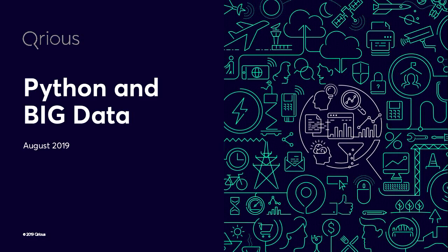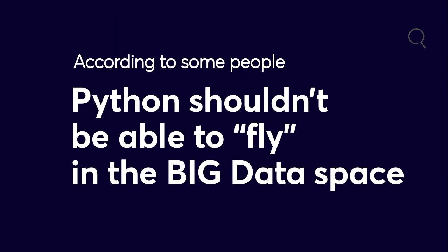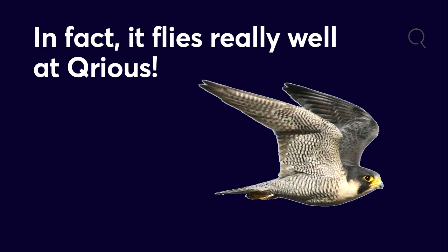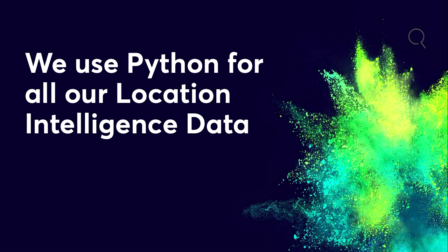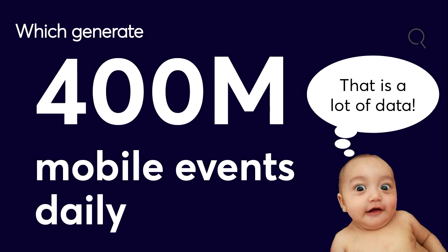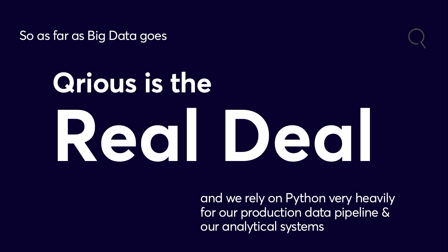Take it away Grant. Okay, can you hear me? Python and big data. When setting up our stack you'd hear things like: Python isn't enterprise, you should use Java; or Python is slow, what about Scala? And according to some people Python shouldn't be able to fly in the big data space. And yet it flies — in fact it flies really well. At Curious, the company I work for, we use Python for all our location intelligence data. That's data from two million devices every day, which generate 400 million mobile events daily — which is a lot of data. That's 150 billion records a year.